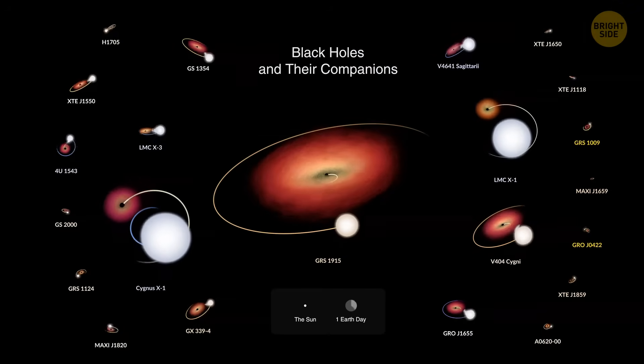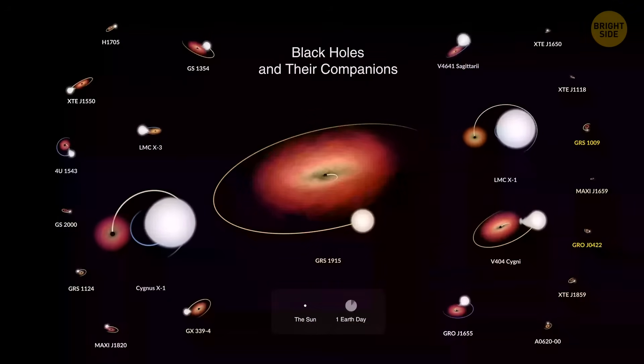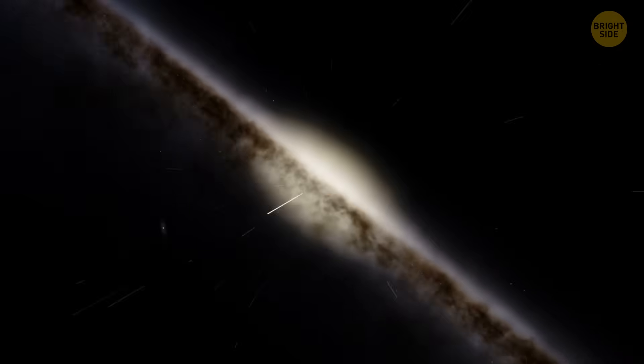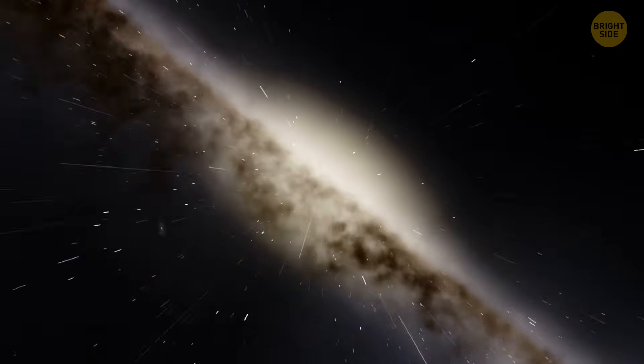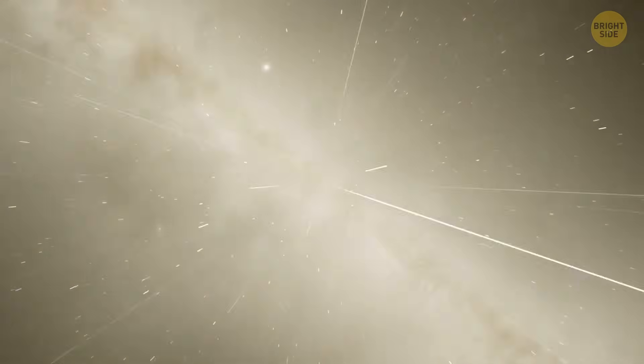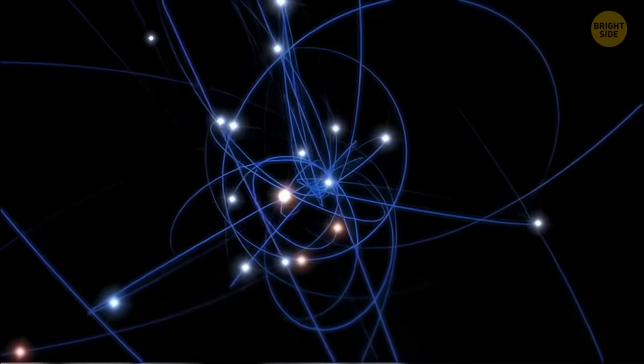Thanks to these dramatic duos, we've found around 50 black holes in our galaxy so far. But scientists think there could be up to 100 million lurking quietly in the Milky Way. So yeah, we're surrounded.